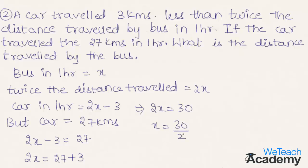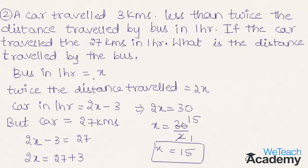By simplifying, 30 divided by 2 gives us x equal to 15 kilometres. So the distance travelled by the bus in 1 hour is 15 kilometres.